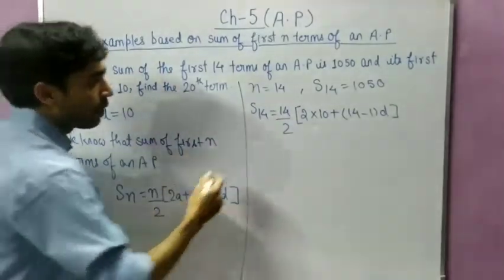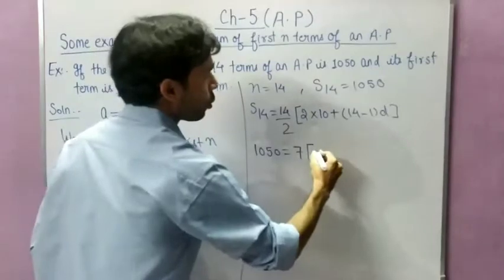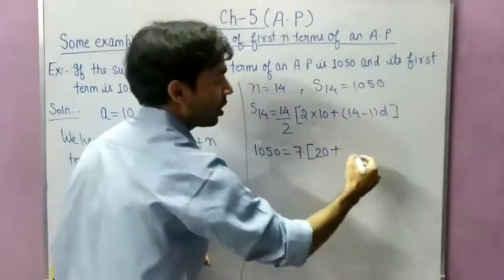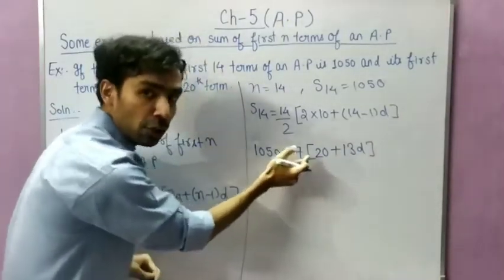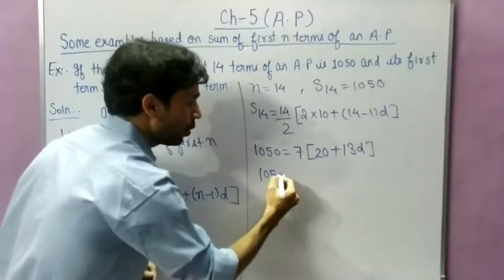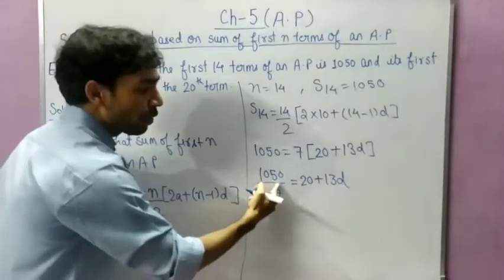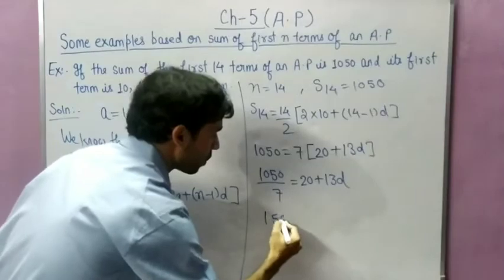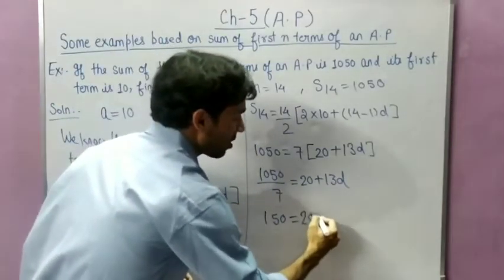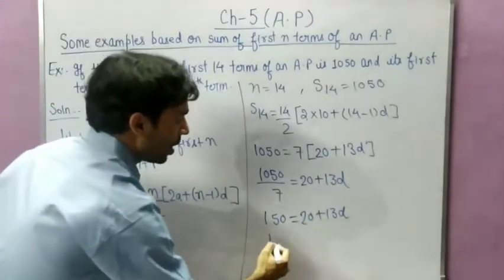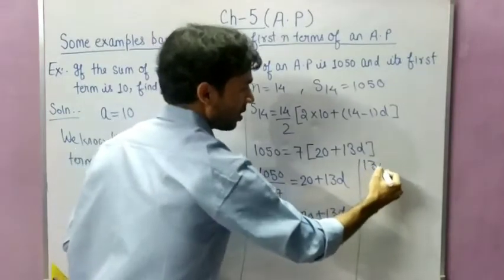Now we solve: 14 divided by 2 is 7, so we have 7 in bracket (20 plus 13D). Dividing both sides: 1050 upon 7 equals 20 plus 13D. When 1050 is divided by 7, it gives 150. So 150 = 20 + 13D. Bringing 20 to the other side: 150 minus 20 equals 13D, giving 130 = 13D.